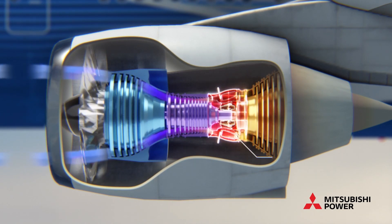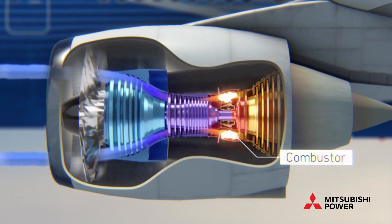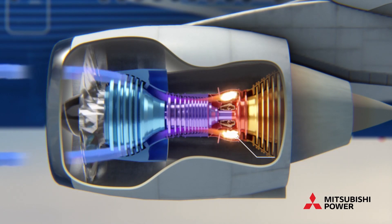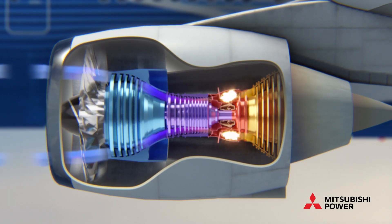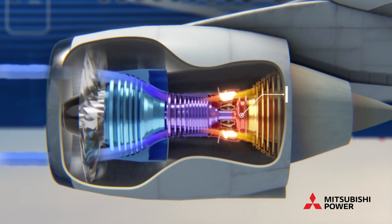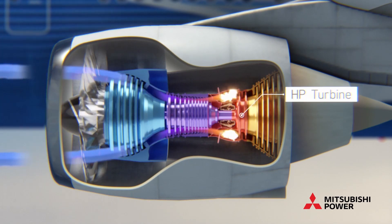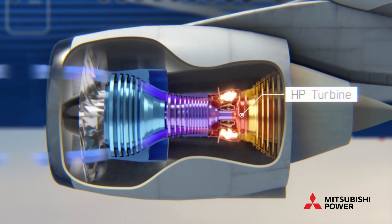The compressed air then enters the combustor, where it mixes with fuel and is ignited. The resulting gases rapidly expand and enter the high pressure, or HP, turbine, causing its blades to rotate.